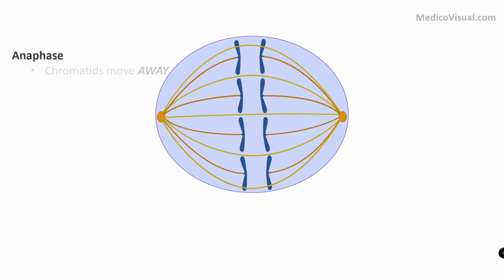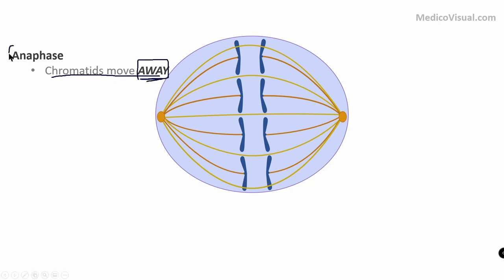This phase is called anaphase — in which chromatids move away from each other. A for away — A for anaphase.